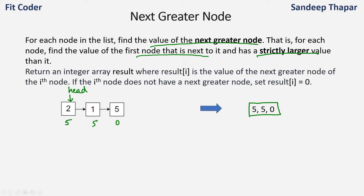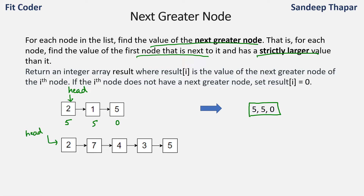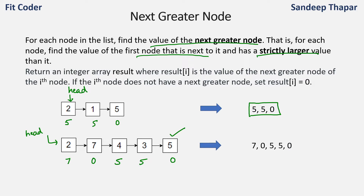Let's take one more example with this linked list 2→7→4→3→5. For 2, the next greater value is 7. For 7, there is no value to the right which is greater than 7, so we return 0. For 4, the value 5 is to the right and is greater. For 3 also, value 5 is to the right and greater. And for 5, since there is no value next to it, we return 0. So the answer for this will be [7, 0, 5, 5, 0].